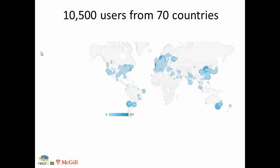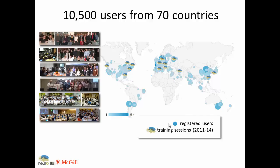We have a very strong user community over the years, and it's really ramping up over the past couple of years. This is a world map where every dot basically represents a focus of users — it's pretty much everywhere. The little brains on top represent the training sessions we've been doing over the past two to three years. Looking at the numbers, we've probably trained approaching 1,000 users on every continent.